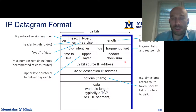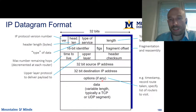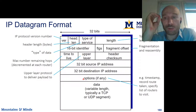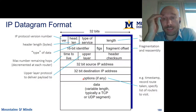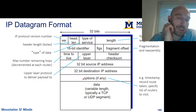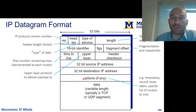Next we have the checksum, which covers all those fields to check for corruption. Then finally we get to the source IP address and the destination IP address, which are used in routing. You can also include options — those options could include things like collecting timestamps or recording the route or interfaces traversed by the packet. There are many other options, but not all of them are necessarily obeyed by routers, so you can specify them but there's no guarantee a router will even read them.